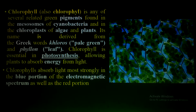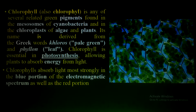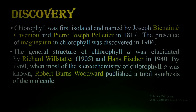Chlorophyll is very important for photosynthesis, allowing plants to absorb energy from light. Chlorophyll absorbs light more strongly in the blue portion of the electromagnetic spectrum as well as the red portion. Chlorophyll reflects the green color — that is why it looks green to us. So the absorption spectrum covers blue and red, while it reflects green.